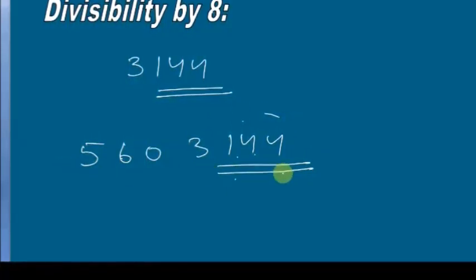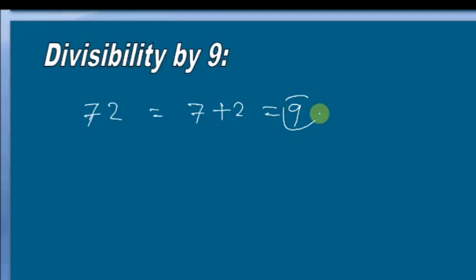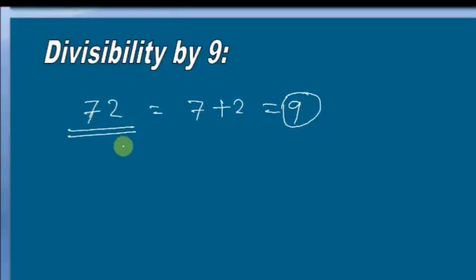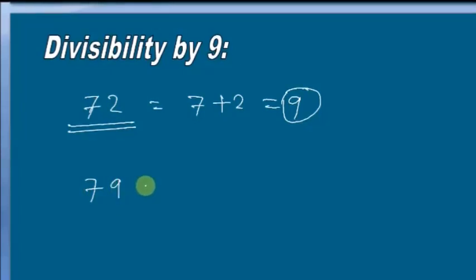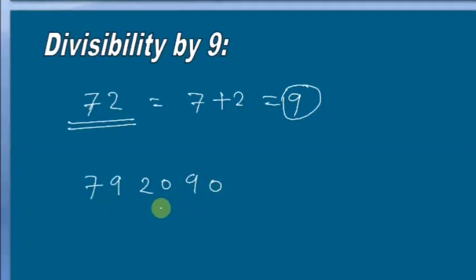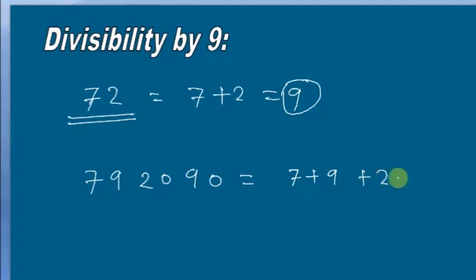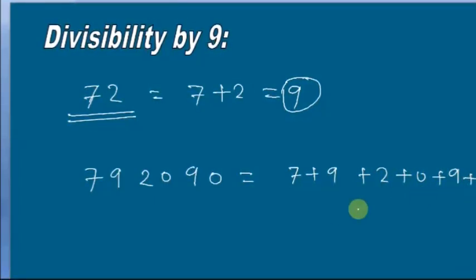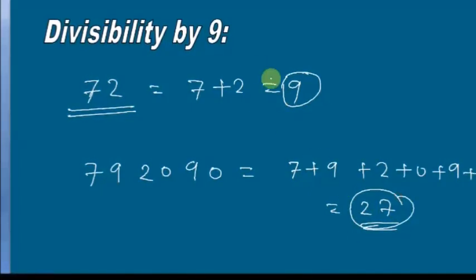A number is divisible by 9 if the sum of its digits is divisible by 9. For example, take 72: 7 + 2 = 9, and since 9 is divisible by 9, therefore 72 is also divisible by 9. For a larger number, let us check the sum of its digits: 7 + 9 + 7 + 9 + 2 + 2 + 0 + 9 + 0 = 45... which gives 27. As 27 is divisible by 9, therefore this large number is also divisible by 9.